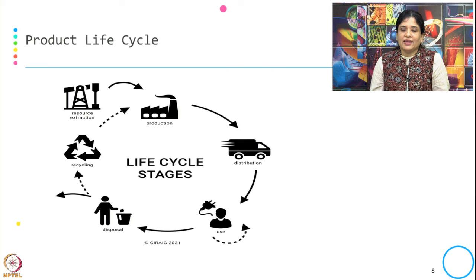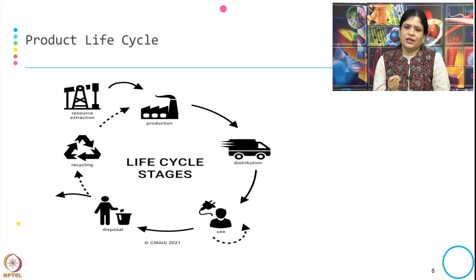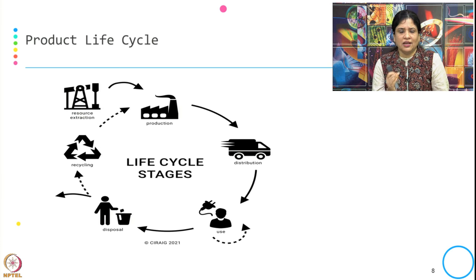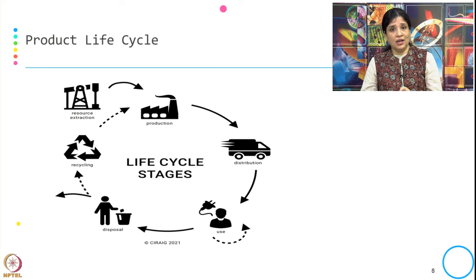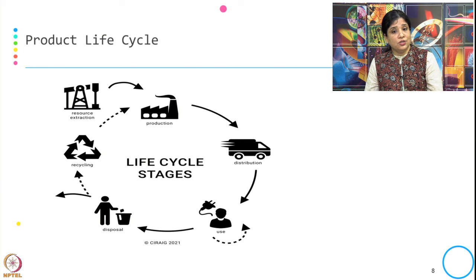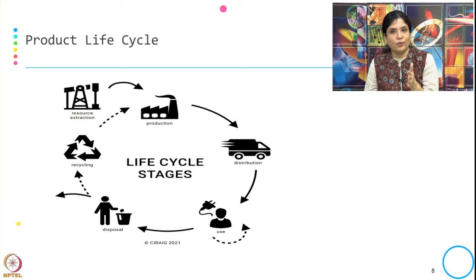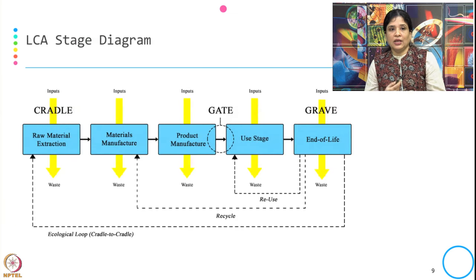This is an example of a product life cycle. It starts from getting the resource, getting produced, getting distributed, getting used, disposed, and finally recycling. For every product, this is typically the life cycle: we get the raw material, produce, distribute to end users, the end users use it, they dispose it off, and then part of it gets recycled and part goes into final disposal.